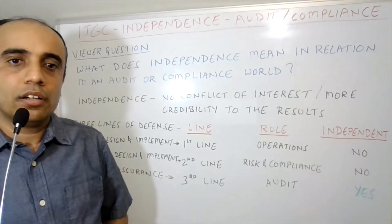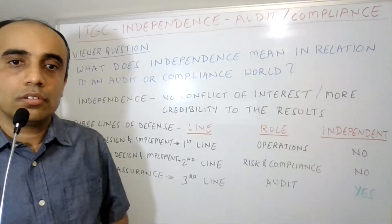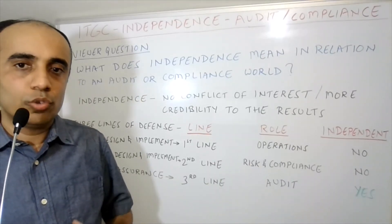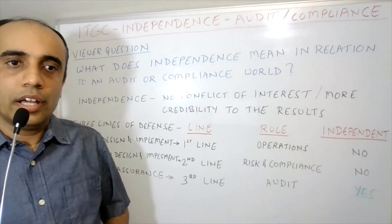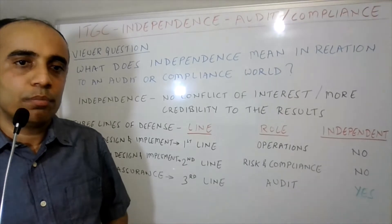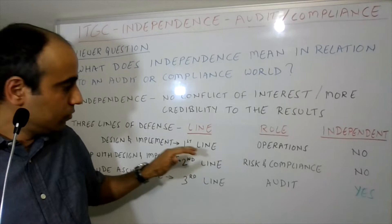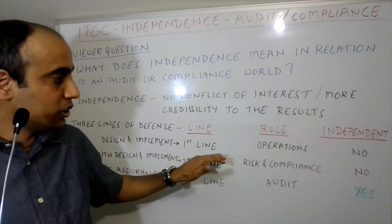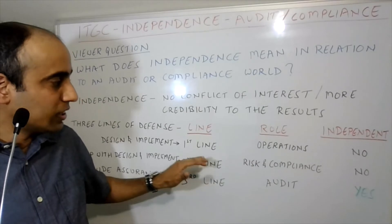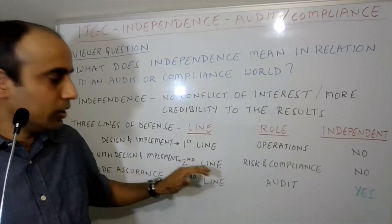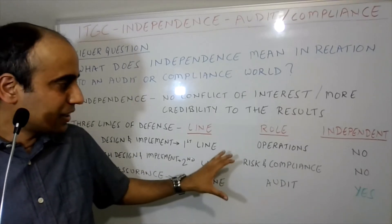When you talk about the second line of defense, these are our IT risk and compliance people. They act as risk liaisons, helping the first line of defense in the design and implementation of IT processes and operations. So the first line is responsible for the overall design and implementation to run the day-to-day operations, while the second line will assist the first line and provide the support they need with that design and implementation.